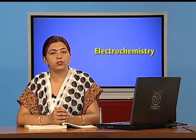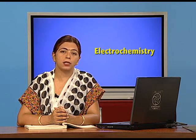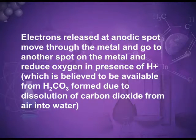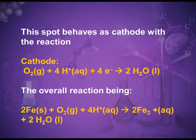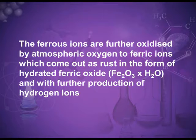The electrons move through the iron article and reduce oxygen at another point in the presence of hydrogen ions. These hydrogen ions come from carbonic acid (H₂CO₃), formed when atmospheric CO₂ dissolves in moisture. Oxygen accepts electrons in the presence of H⁺ ions and is reduced to form water — this occurs at the cathode. The iron is thus oxidized first to ferrous, then to ferric state.